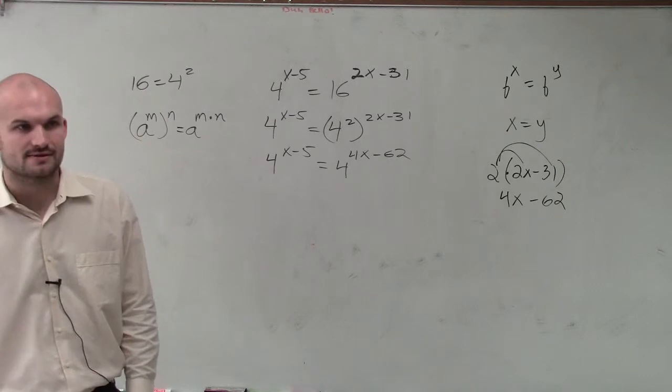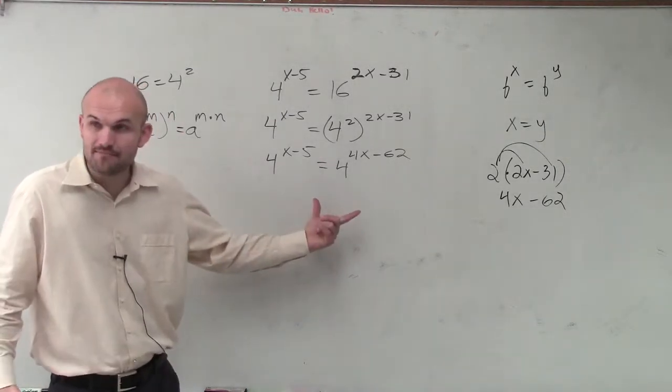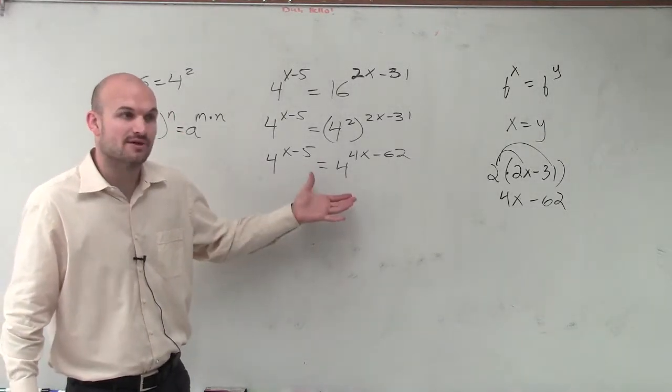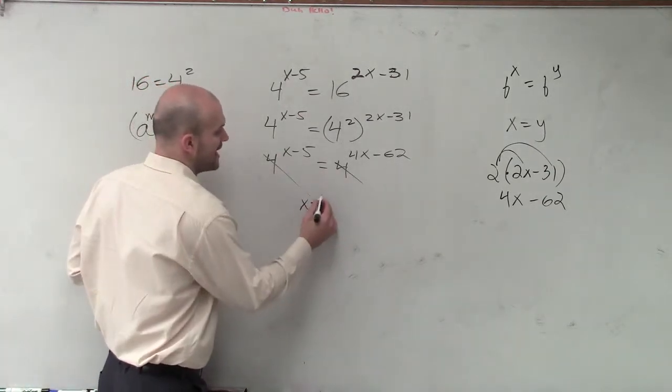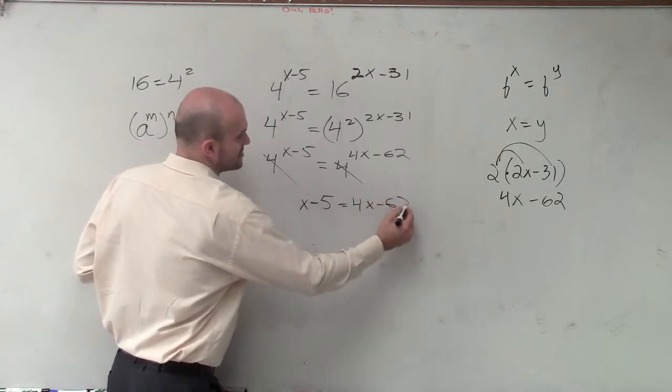Does everybody see that? Now that I have exactly the same bases raised to powers, and they're equal to each other, I can now just say x minus 5 is equal to 4x minus 62.